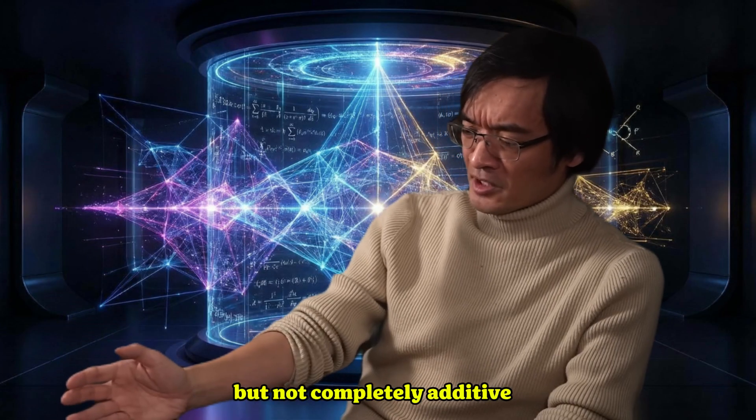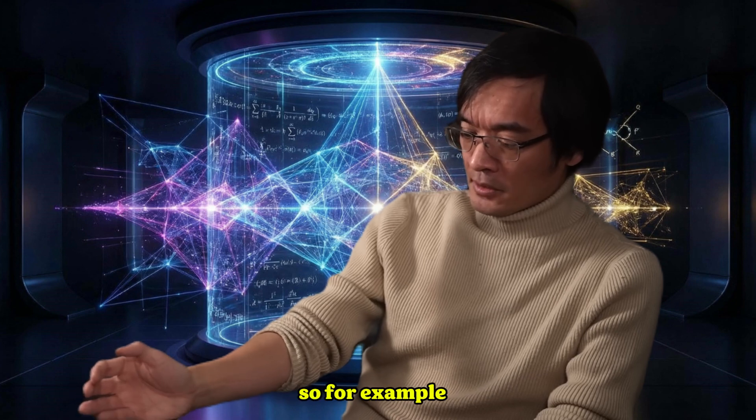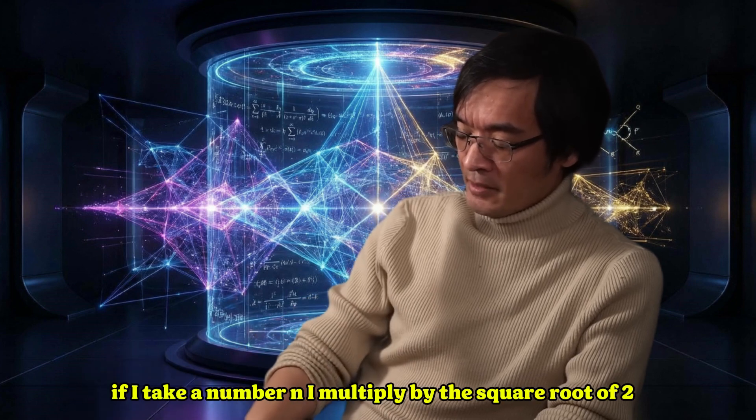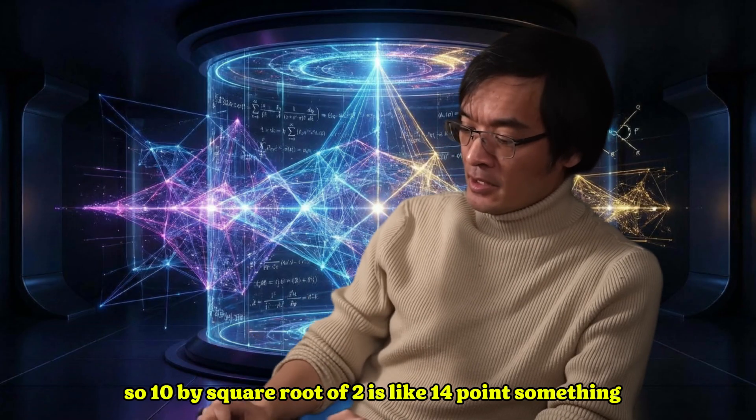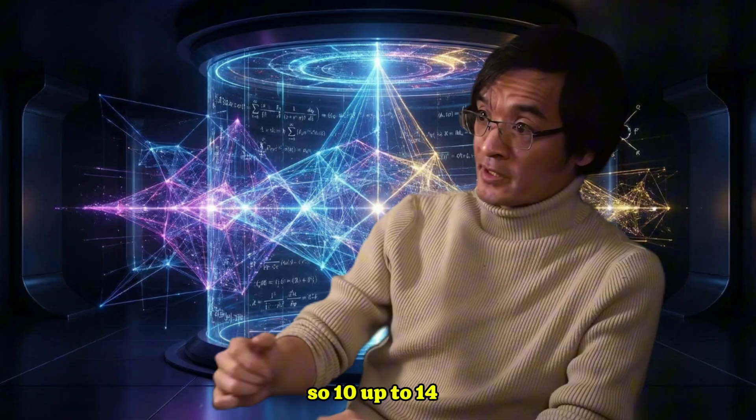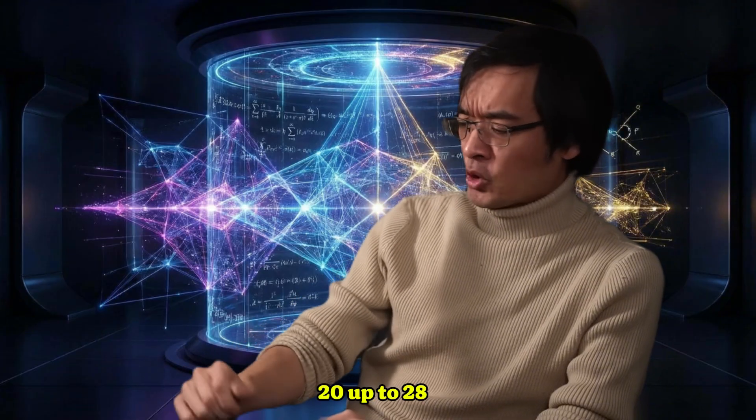Some functions are kind of additive but not completely additive. So for example, if I take a number n, I multiply by the square root of two, and I take the integer part of that. So ten by square root of two is like fourteen point something, so ten went up to fourteen. Twenty went up to twenty-eight.